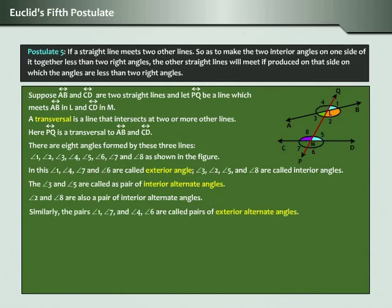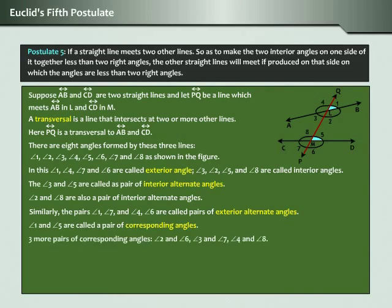Similarly, the pairs angle one and angle seven, and angle four and angle six, are called pairs of exterior alternate angles. Angles one and five are called a pair of corresponding angles. There are three more pairs of corresponding angles: angle two and angle six, angle three and angle seven, angle four and angle eight.